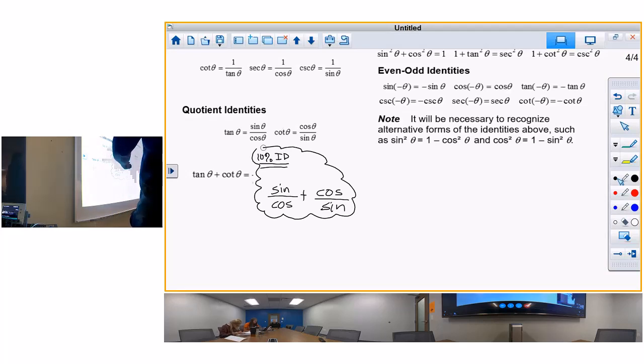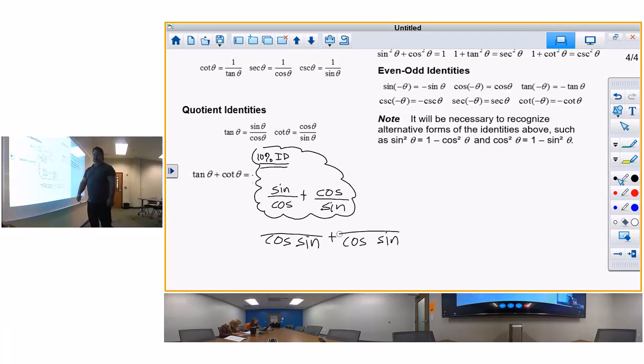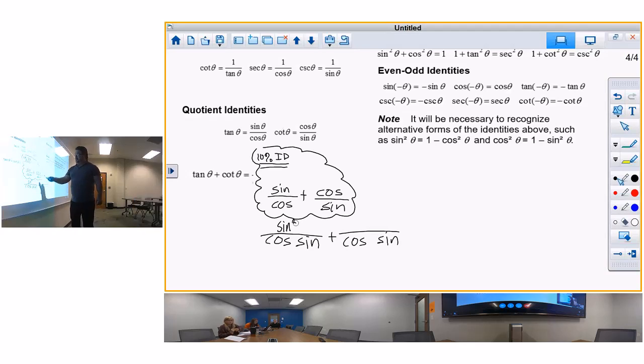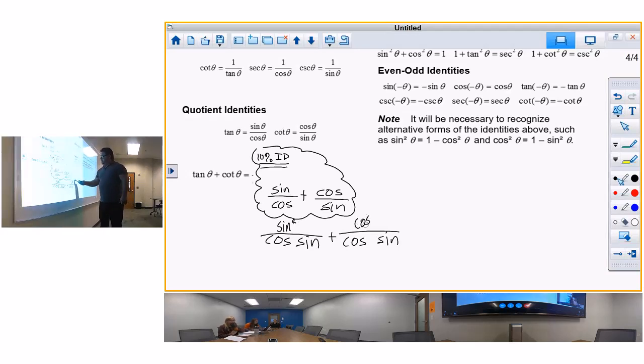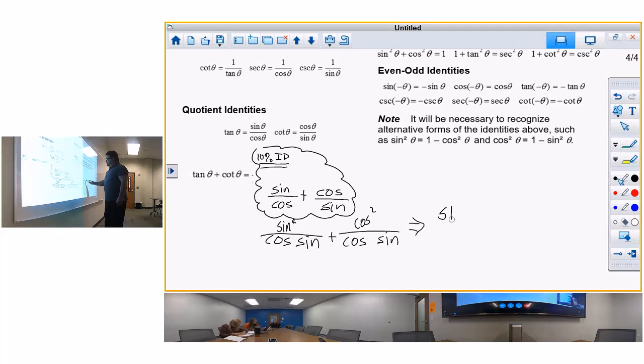So here is the ten percent. That's all new right there. That's the new stuff. Now we have nothing but algebra because what do we have? We have two fractions. You need to have what to add two fractions? Common denominator. Cosine sine plus cosine sine.